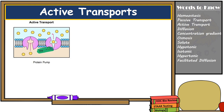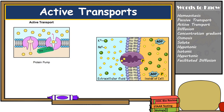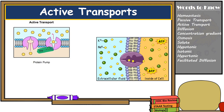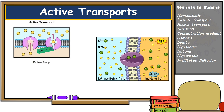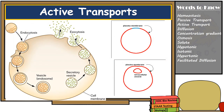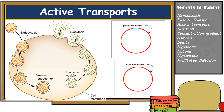One example of active transport is the sodium-potassium pump. Sodium ions are pumped out of the cell and potassium ions are pumped into the cell by specific channel proteins which require energy to move these ions. The cell also uses energy to move large substances or large amounts of a substance in vesicles. Transport vesicles form from the cell membrane itself.